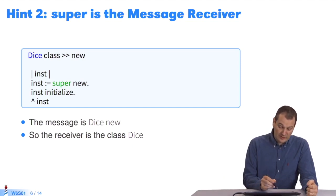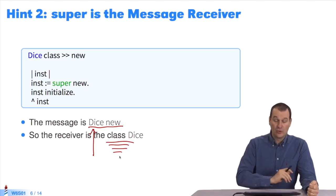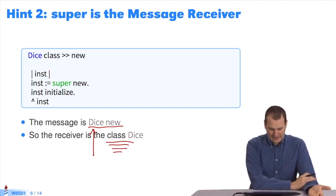Here, the message is Dice new. So what's the receiver? Syntactically speaking, it's Dice. The class is Dice. With these clues, you should understand better.